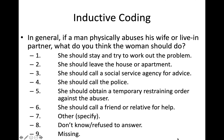For example: 'If a man physically abuses his wife or live-in partner, what do you think the woman should do?' Response options include: (1) she should stay and try to work out the problem, (2) she should leave the house, (3) she should call a social service agency, (4) she should call the police, (5) she should obtain a temporary restraining order, (6) she should call a friend or relative, (7) other — specify, (8) don't know/refuse to answer, and (9) missing. This should cover just about everything.